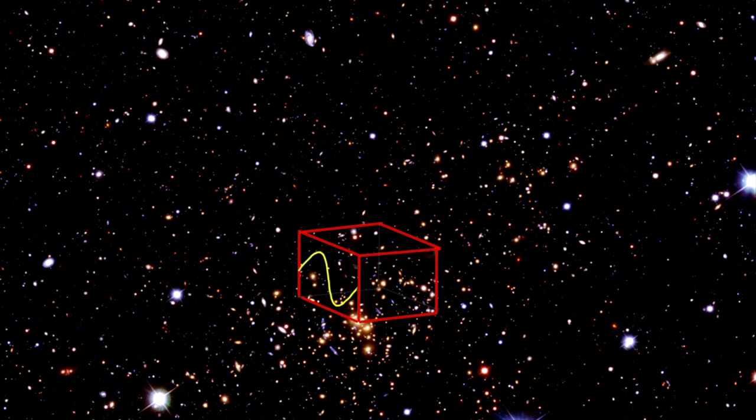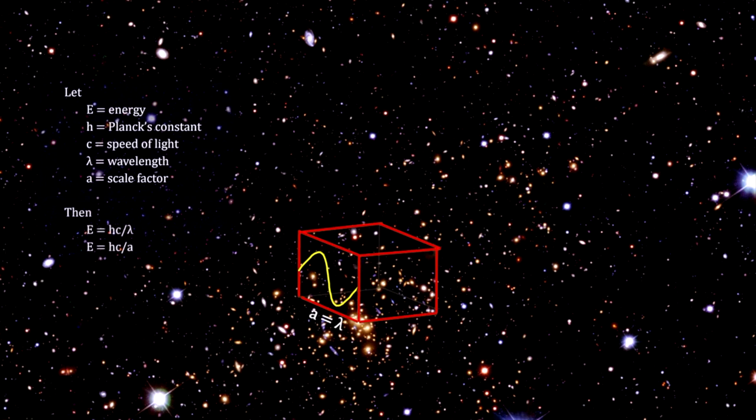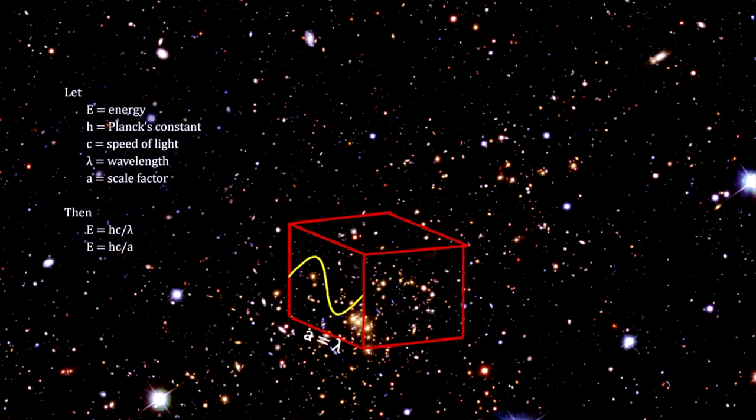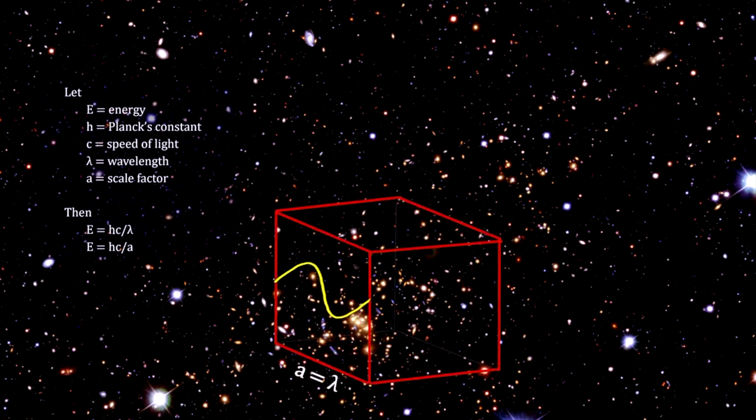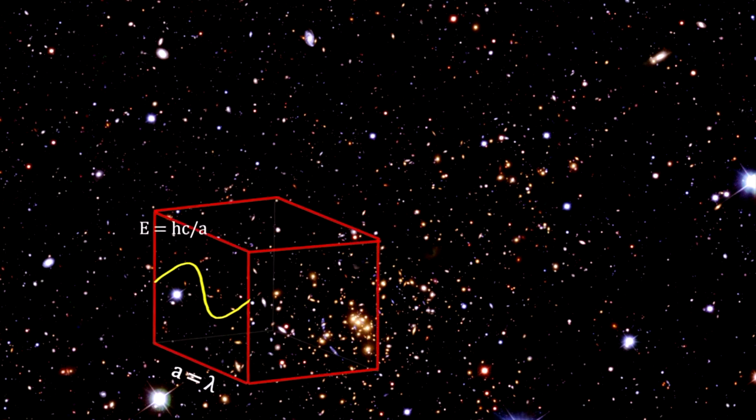Unlike matter that moves through space, photons are attached to the space they propagate through. So, an expanding space will impact photons in a way that does not affect matter. Here's a cubic volume of space with a photon inside. The photon's wavelength, lambda, is equal to the length of the cube, A. Its energy is equal to Planck's constant times the speed of light divided by the wavelength. As the wavelength increases with an increase in the scale factor, the energy decreases, unlike matter where it remained constant. We see that the energy density also depends on the scale factor.